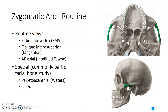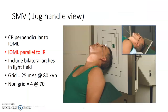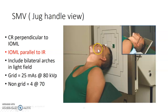For zygomatic arches — at our clinical site, it's included in facial bones, but you may work somewhere with a separate routine. Know the anatomy of what the arch is formed by. The SMV is called the 'jug handle view' because it kind of looks like a jug handle. Ideally you get both arches on one image. If you're using a grid, make sure you use grid technique; if going non-grid, know what to use.